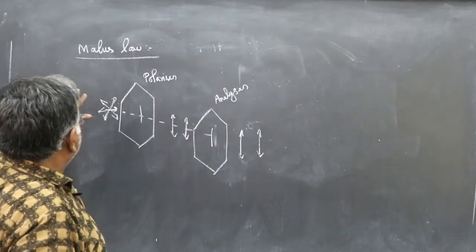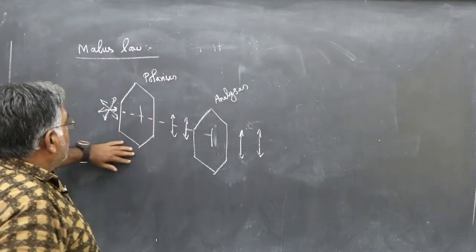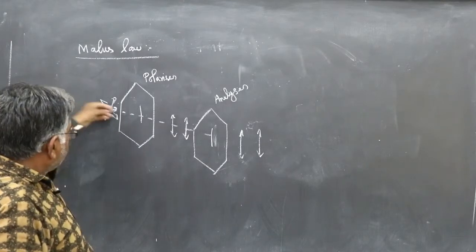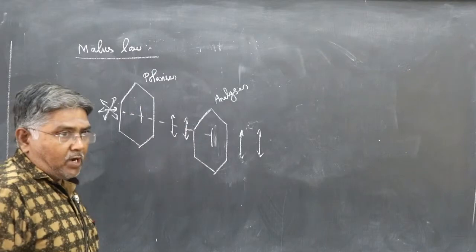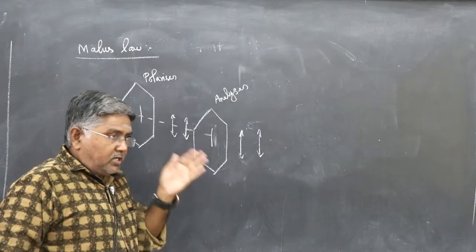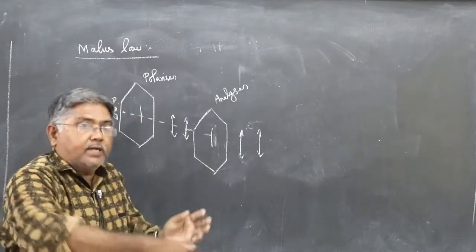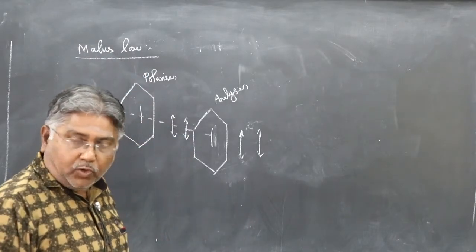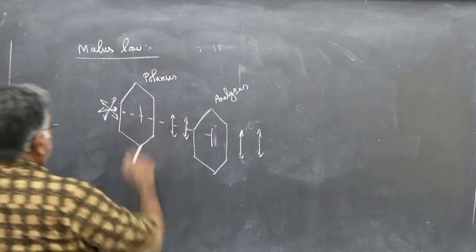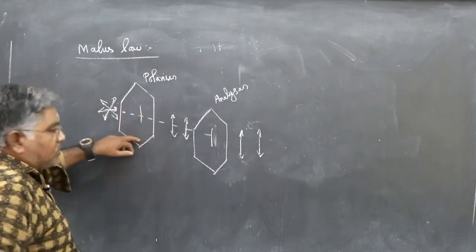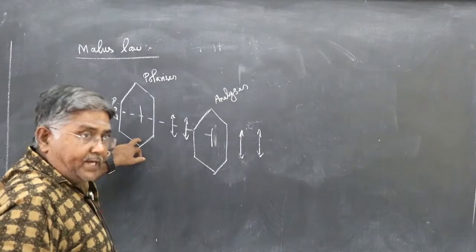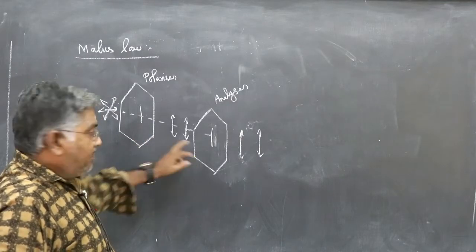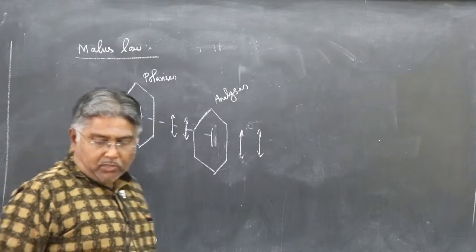This is the Malus's Law diagram. This is the light which is incident on the first polaroid, then there is a second polaroid. The light passes through the first polaroid, then the second polaroid, then to the observer. The first polaroid is called the polarizer and the second is called the analyzer.